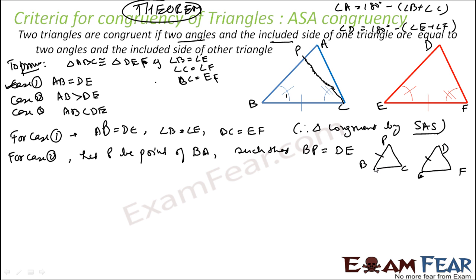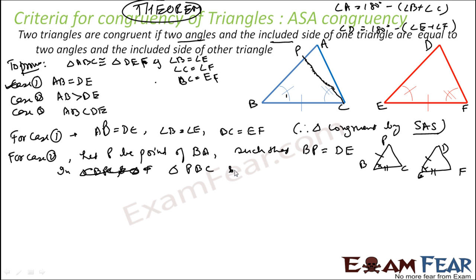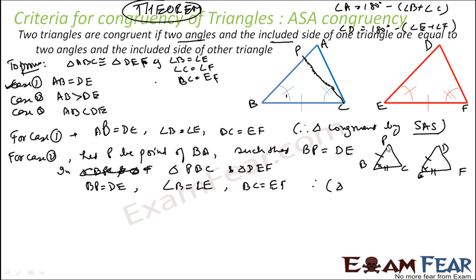If BP is equal to DE — by construction — and BC is equal to EF — given — and angle B is equal to angle E — also given — then triangle BPC is congruent to triangle DEF by the side-angle-side axiom.